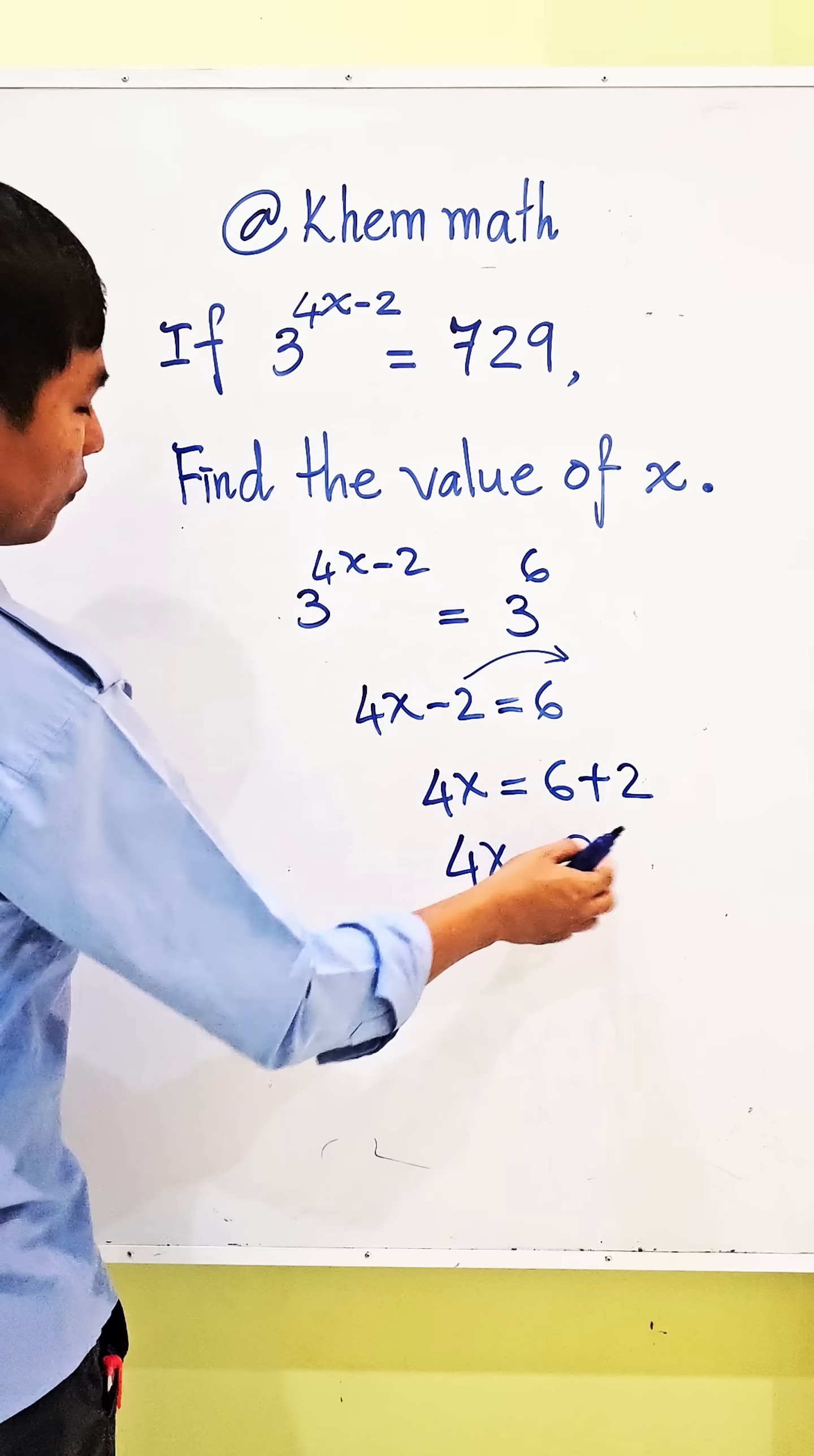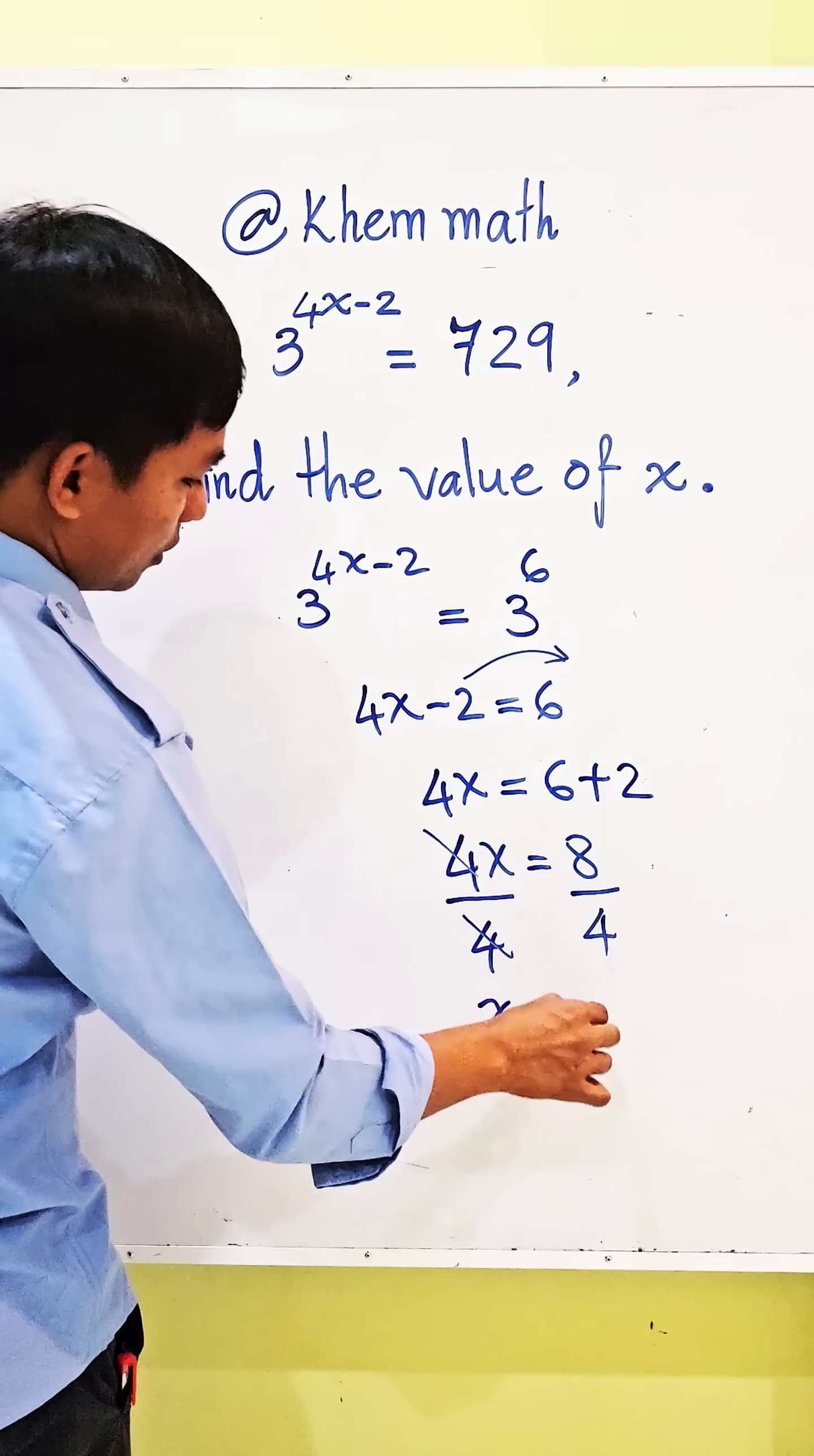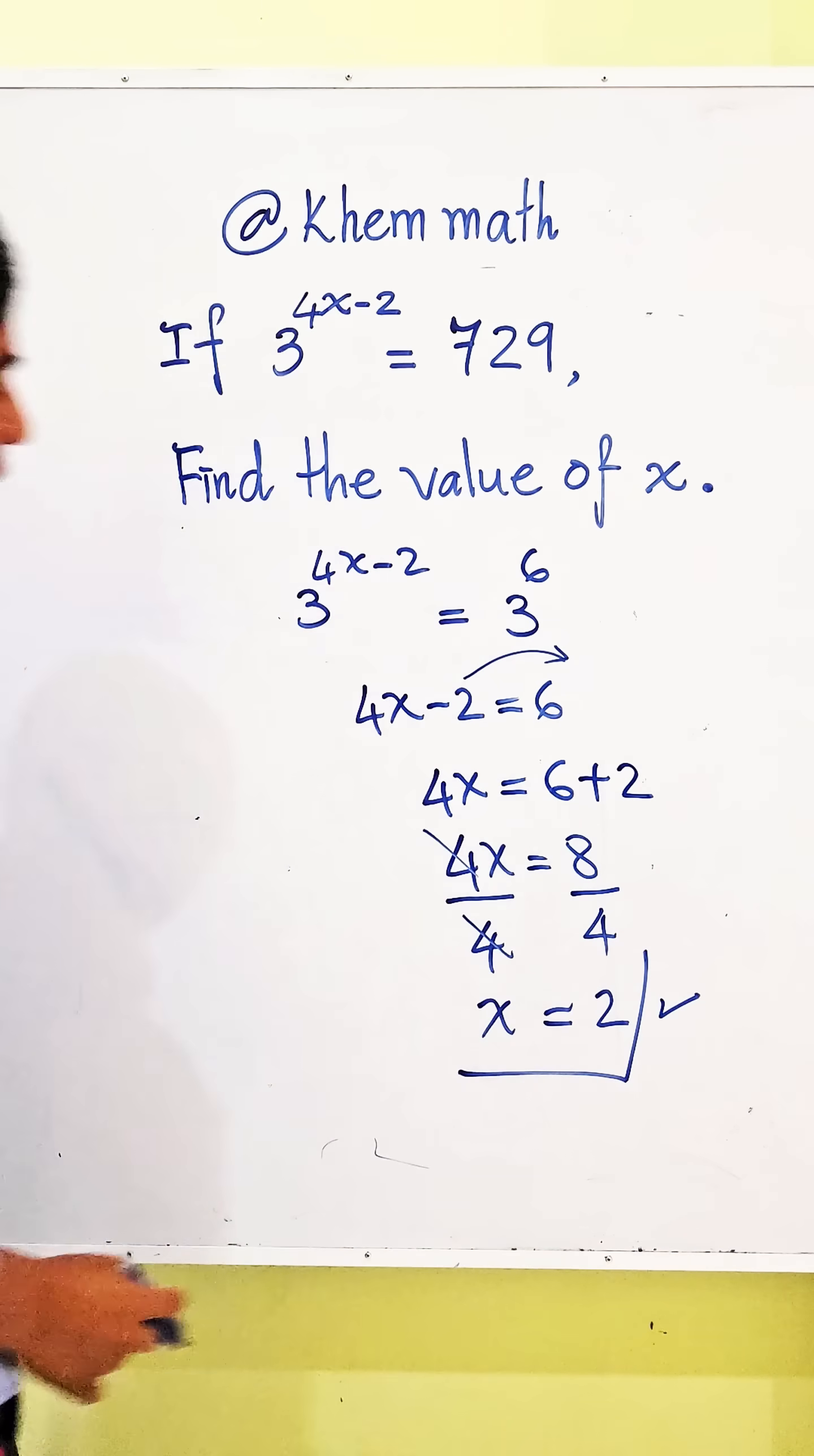And then we divide both sides of this equation by 4. We get 8 divided by 4 is 2. So we get the value of x is equal to 2, which is our answer.